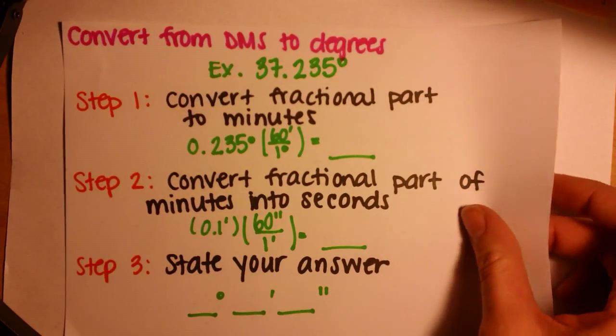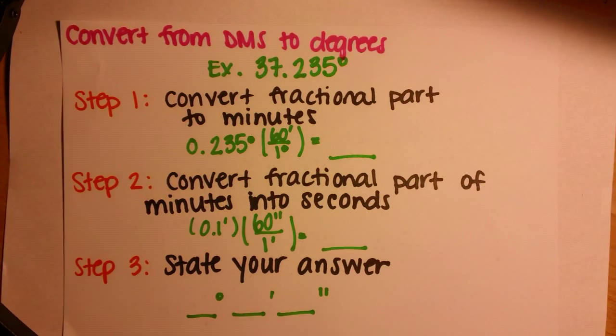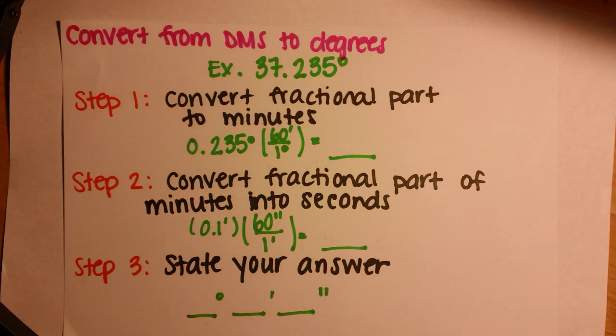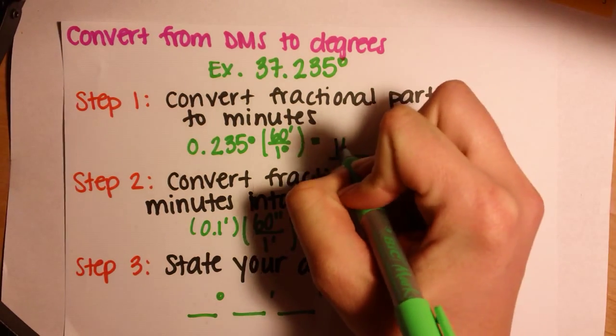For example, to convert from degree minute seconds to degrees, you leave the degree portion alone. Then you convert the fractional part to minutes. So the fractional part is 2.235 degrees, you multiply by 60 minutes over 1 degree, and you'll be left with 14.1.